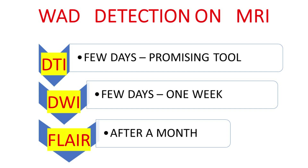Earlier detection of Wallerian degeneration gives prediction of poor motor outcome, and hence therapeutic strategies and neuroprotection might be changed for early rehabilitation. In this background, most radiologists are now tuned to detect Wallerian degeneration even on CT brain in the late stage 3 — that is, after six months to one year — with atrophic changes in the brainstem. Thanks a lot.